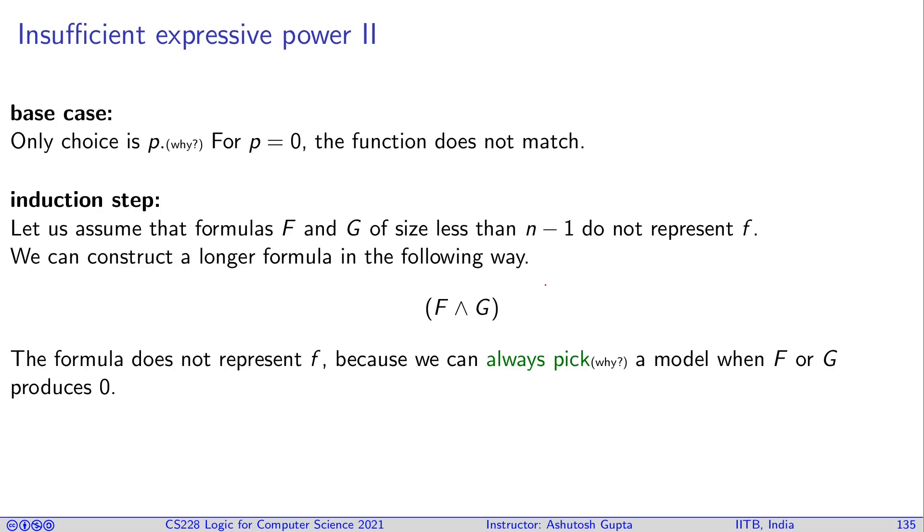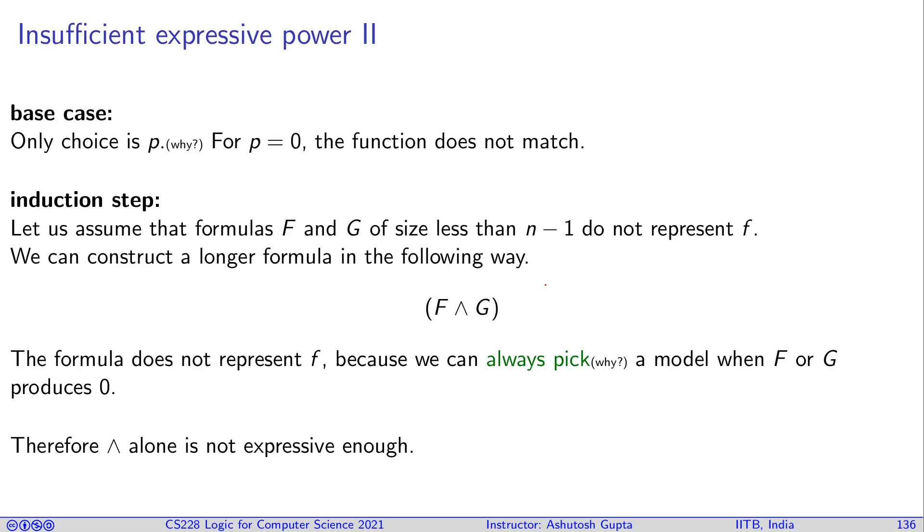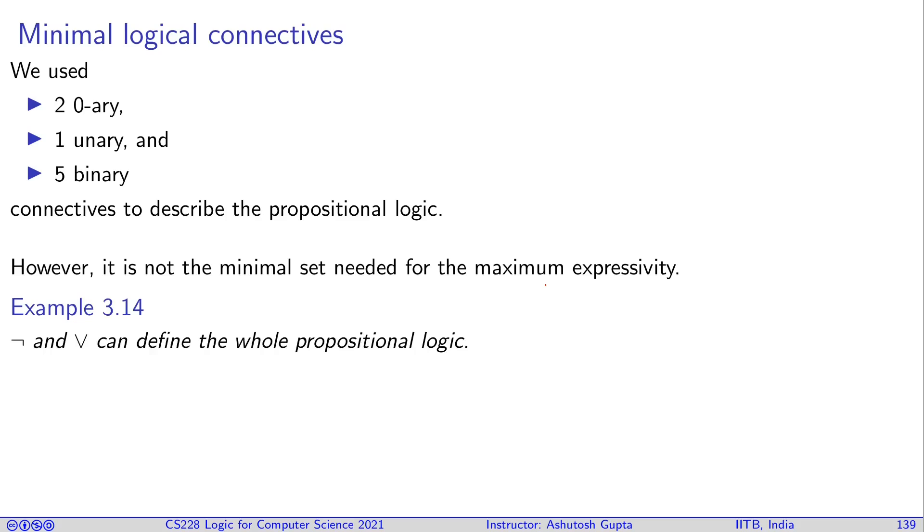Similarly, you can think about what are the minimal logical connectives. There will be cases when sometimes you can do it and sometimes you cannot. The minimal set you can show is that conjunction and not, or disjunction and not, can actually represent the whole propositional logic.